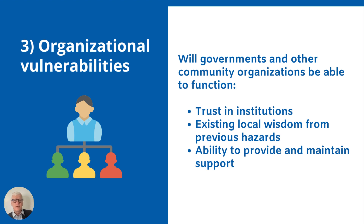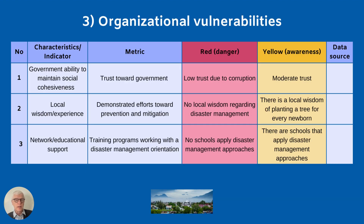Organizational vulnerabilities consider whether governments and community organizations would be able to function in the event of a disaster. Benchmarks include community trust in existing institutions, whether organizations have local wisdom from previous disasters, and whether they have the capacity to maintain support. For example, a government's ability to maintain social cohesiveness is very vulnerable if trust is low due to corruption; moderate trust would be a yellow zone. Data can be gathered through interviews with key stakeholders.